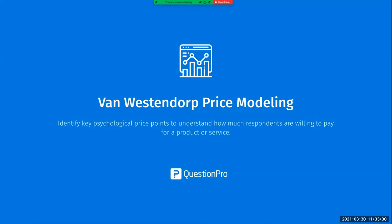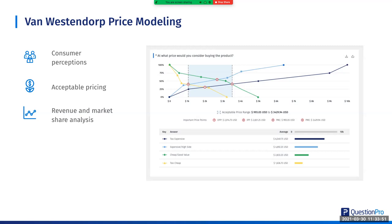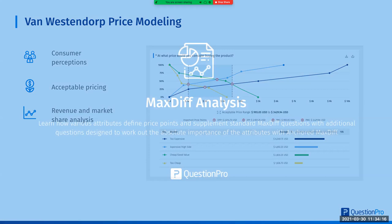In terms of Van Westendorp, it's a popular one and there are a lot of questions about it. Van Westendorp is used to understand how much respondents are willing to pay for a product or service at different price points — what's too expensive, what's expensive but you'd still pay for it, too cheap, and good value. It plays off consumer perceptions, acceptable pricing, and revenue and market share analysis. If you're unsure what price points the market can potentially accept, Van Westendorp is a good model to use, and it is available in the QuestionPro Research suite.